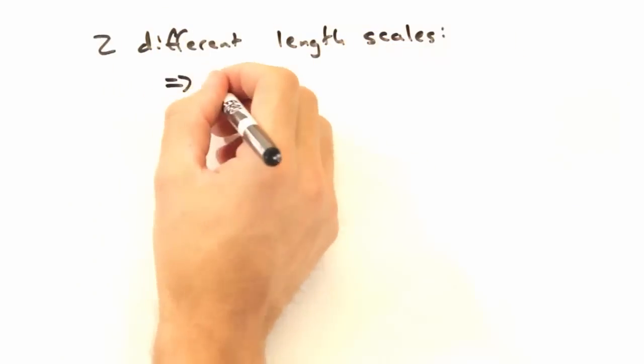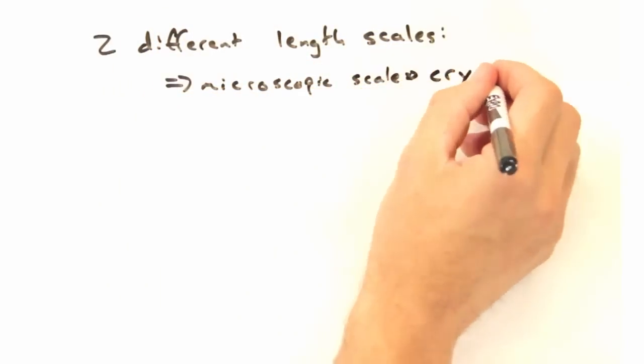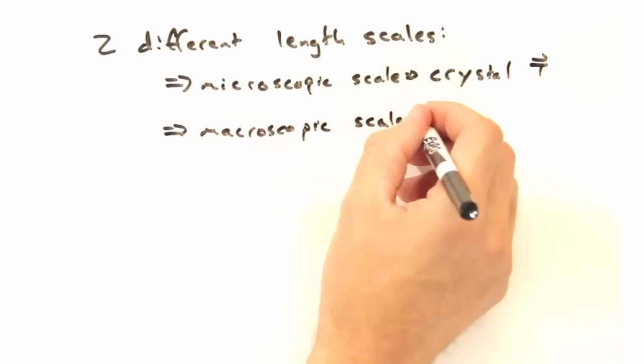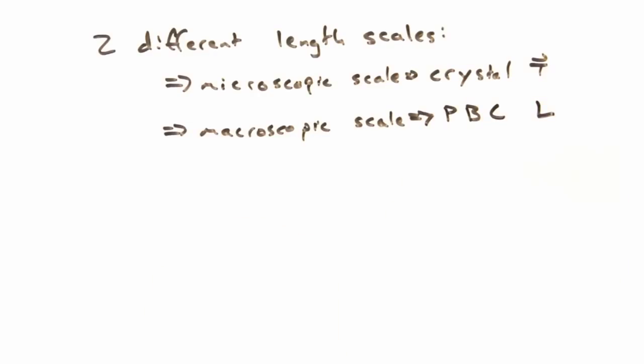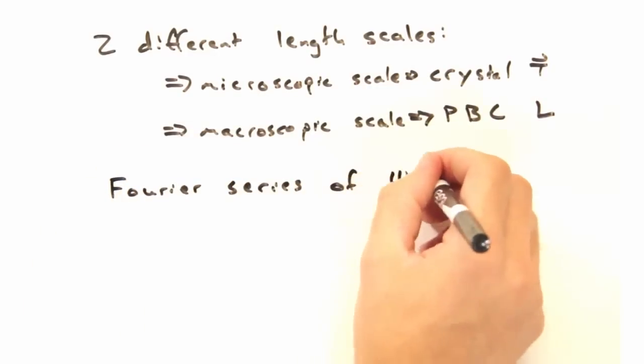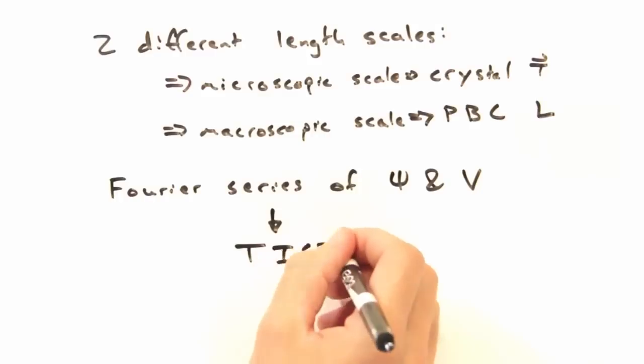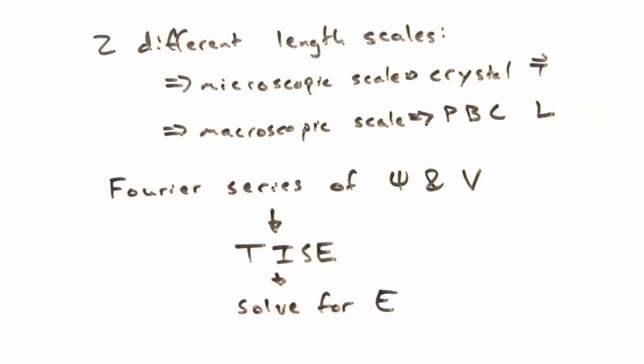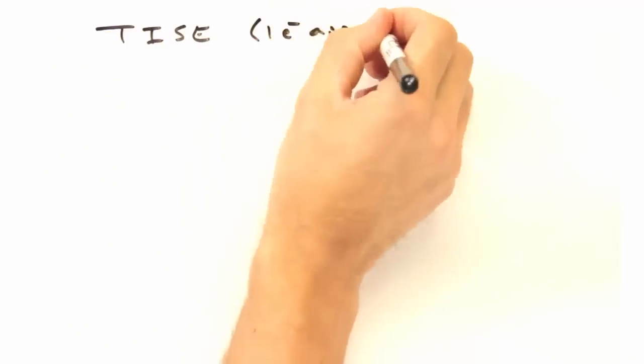The trick here is to remember working on two different length scales: the periodicity at the microscopic scale from the crystal's internal translational symmetry, and the periodicity at the macroscopic scale from invoking periodic boundary conditions. Pretty much everybody gets confused at some point by these two. For now, we can take our Fourier series expressions for psi and v and plug them into the time-independent Schrodinger equation to solve for the energy of our system for a given wave vector k.